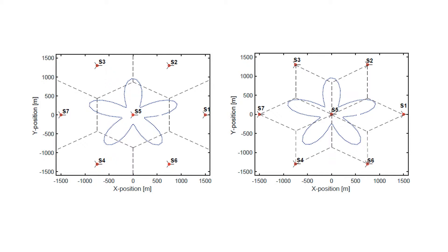Interestingly, the areas for time-of-flight measurements define hexagonal cells, while the areas for the detected base station pairs for TDOA measurements define parallelograms. For example, the area where base stations S1 and S5 are detected for the TDOA measurement is defined as the parallelogram having corners defined by S1 and S5.